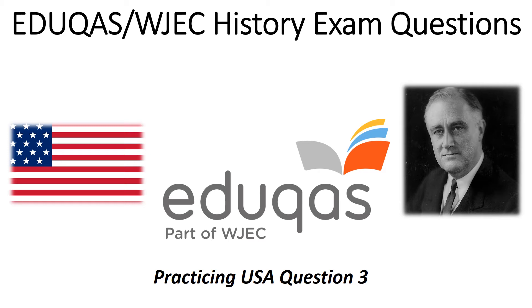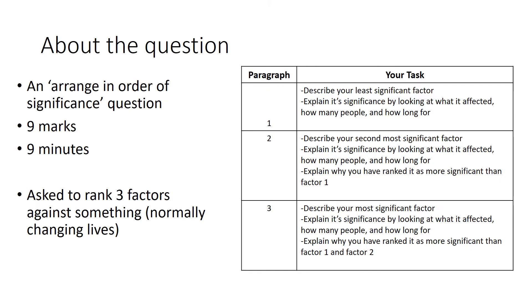This video will be going through how to do a USA question 3. This question is an 'arrange in order of significance' question. It's worth nine marks, which means it's approximately nine minutes long, and you are being asked to rank three factors against something, normally changing lives.